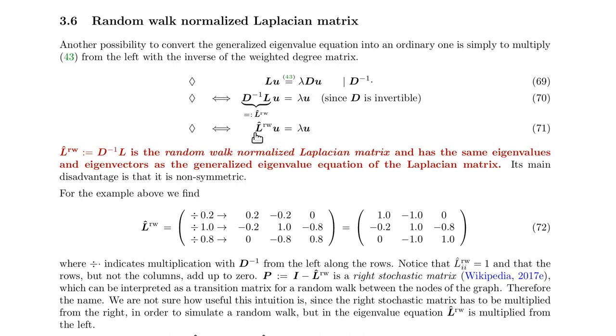So we have this ordinary eigenvalue problem. And this means we simply divide by 0.2, 1.0, and 0.8, and we get this matrix.